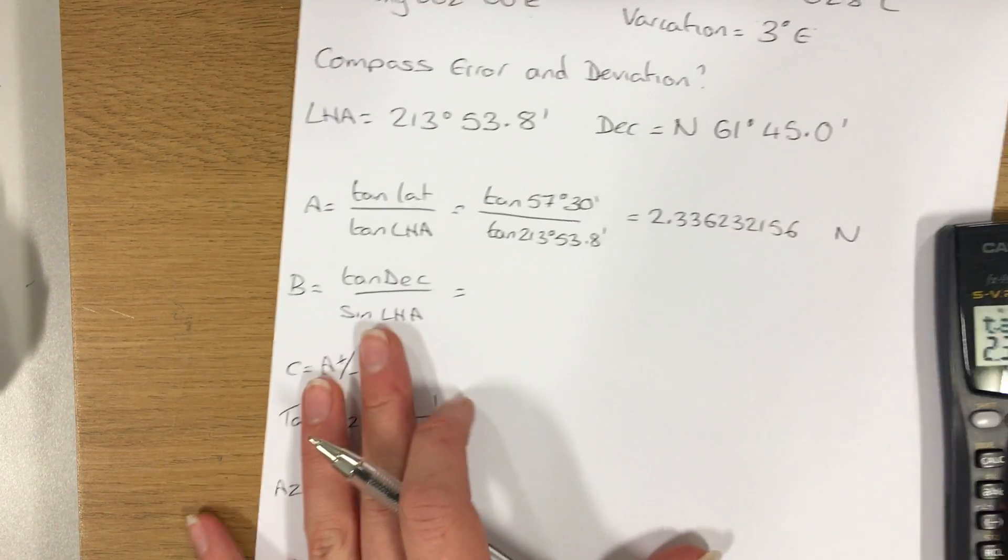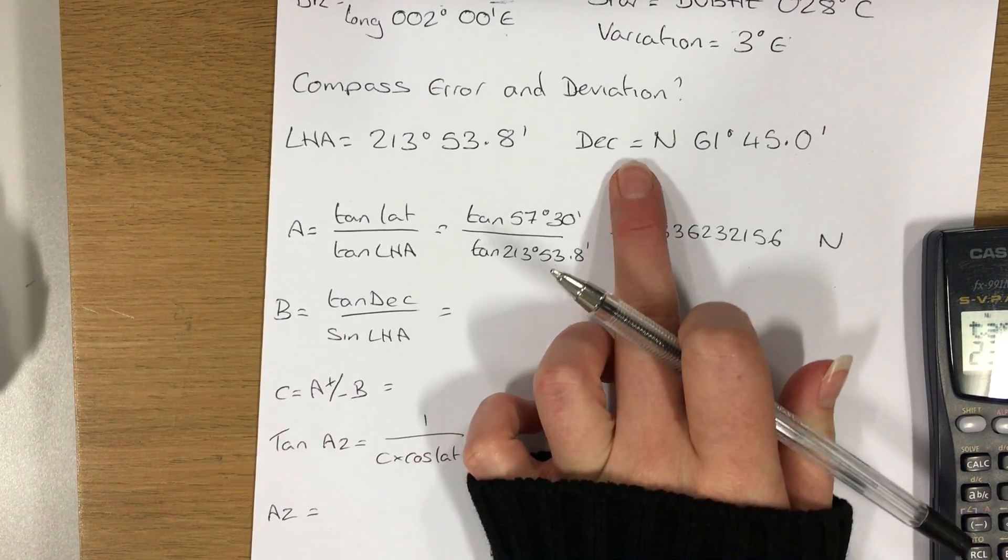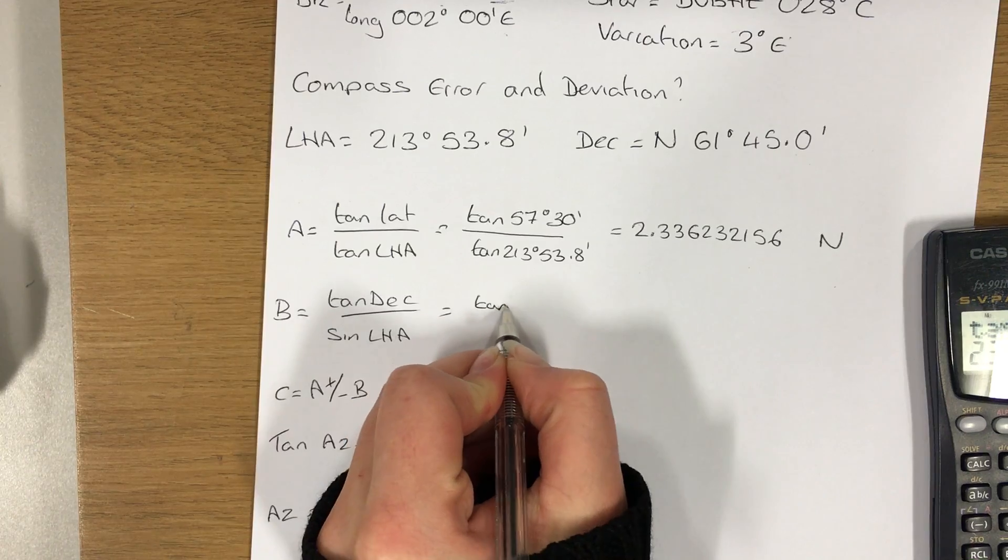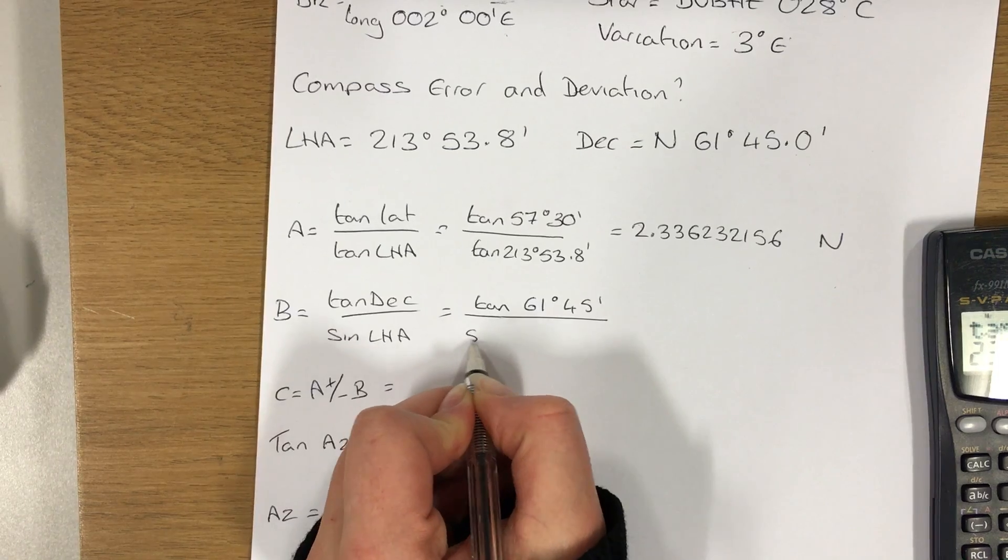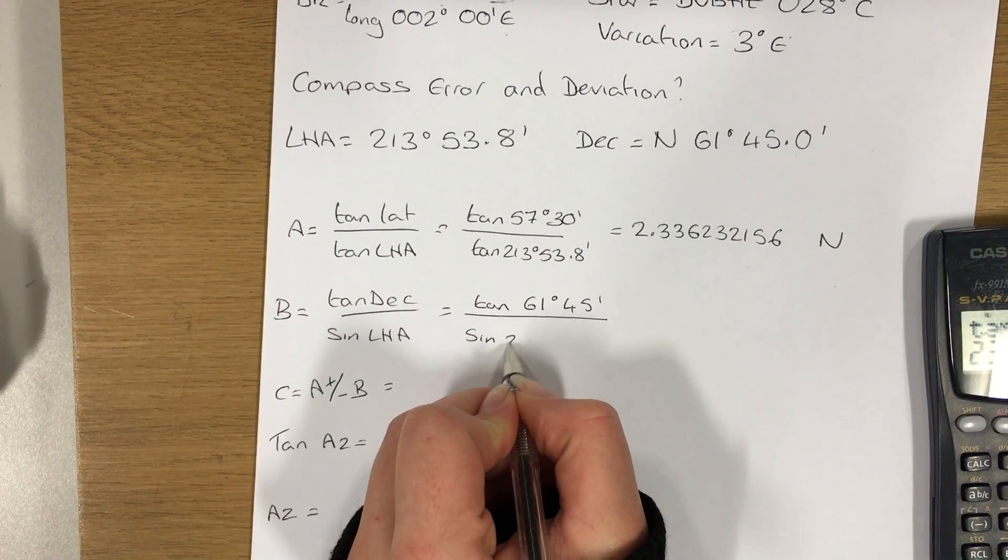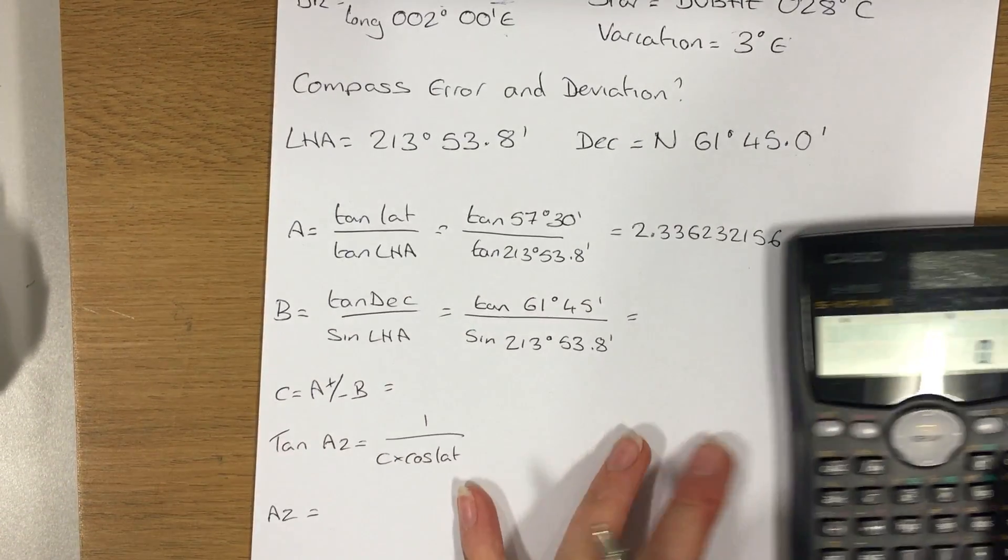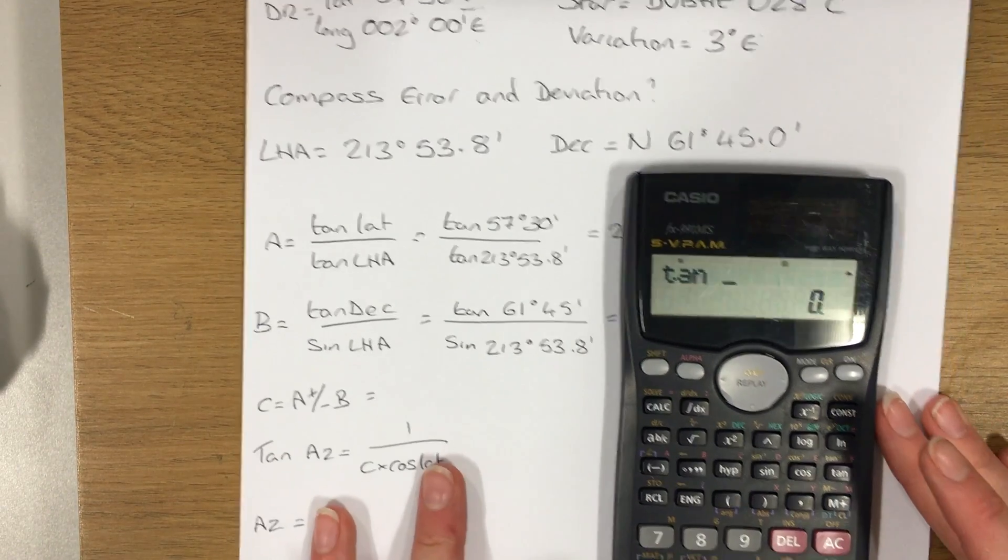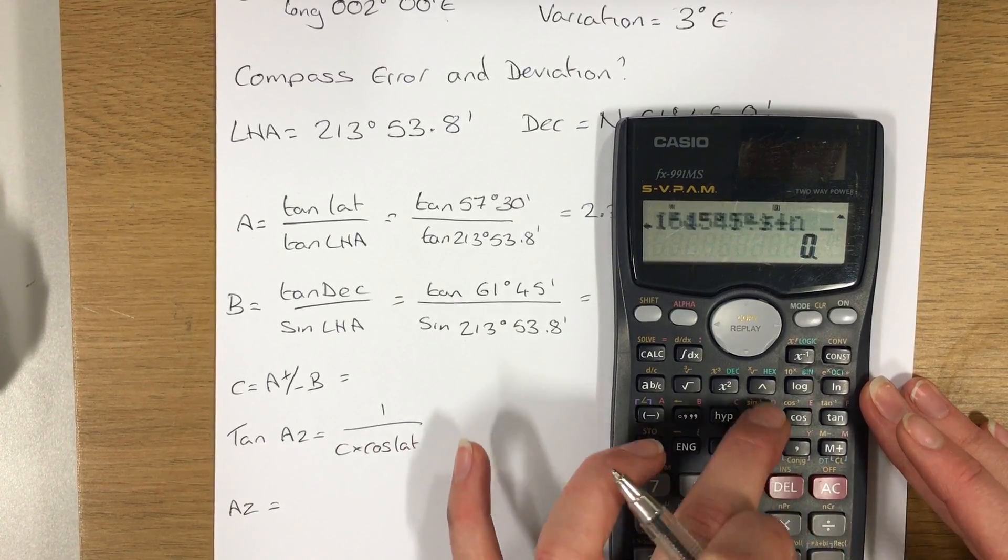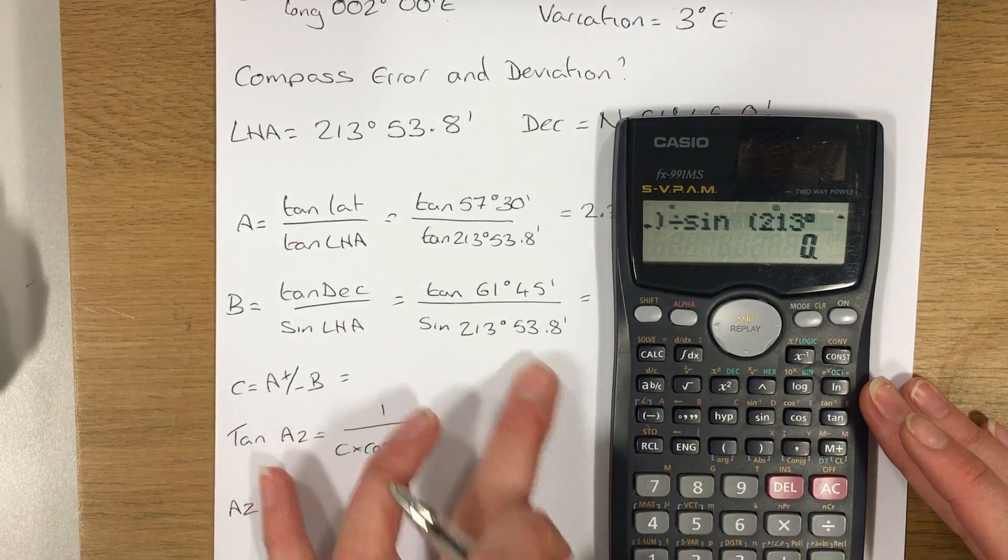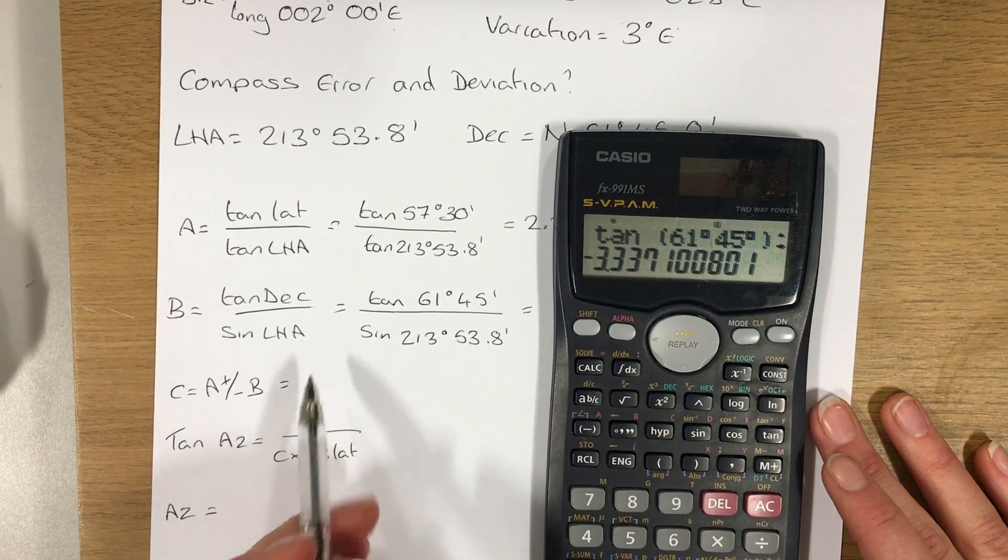So therefore I'm going to name A the same as my latitude, which is north. So now I need to find a value for B. B is equal to the tan of the declination divided by the sine of the LHA. The declination I've already found, so divide that by the sine of the LHA.